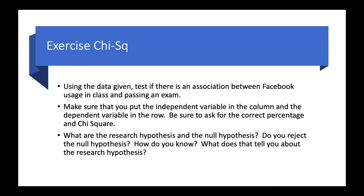Here is an exercise: using the same data, test if there is an association between Facebook usage in class and passing an exam — whether students concentrating versus playing on Facebook can pass the exam or not. Run the chi-square, making sure to put the independent variable in the column and the dependent variable in the row. Ask for the correct percentage and the chi-square. State your research hypothesis and null hypothesis. Do you reject the null hypothesis? How do you know, and what does that tell you about the research hypothesis? See you in the next video — thank you very much, and don't forget to do this exercise.